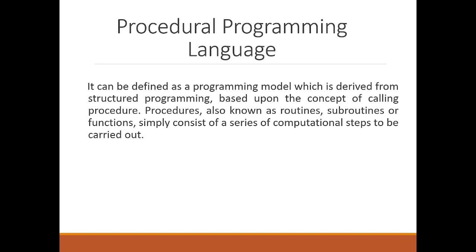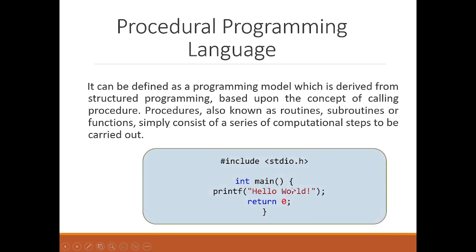Procedural programming follows a top-down approach, whereas object-oriented programming languages follow a bottom-up approach. Here is a sample C program to illustrate. As you can see, first we include some header files — stdio.h, which stands for standard input-output. After that, we write 'int main', because in every C program we must have a main function. Without it, the compiler will not compile the program.